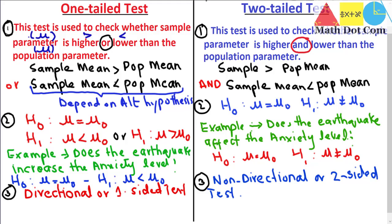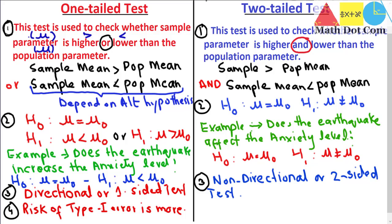Another difference between them is the risk of making a Type I error. The risk is higher with a one-tailed test because the statistical significance — the alpha — is associated with only one side of the probability distribution. In a two-tailed test, the risk of a Type I error is less because the alpha value is divided into two directions, while in a one-tailed test it is concentrated in one direction only.